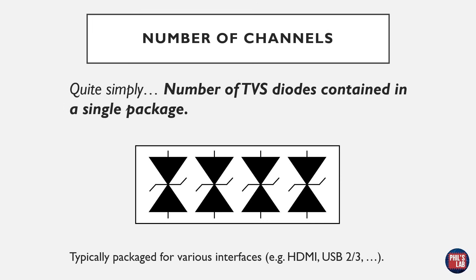The number of channels is simply the number of TVS diodes contained in a single package. The reason we have multiple channels is that some TVS diodes are packaged for various interfaces — for example, high-speed TVS diodes specifically for HDMI might have four or eight channels, USB 2 might have two channels for data and one channel for power, and so on.